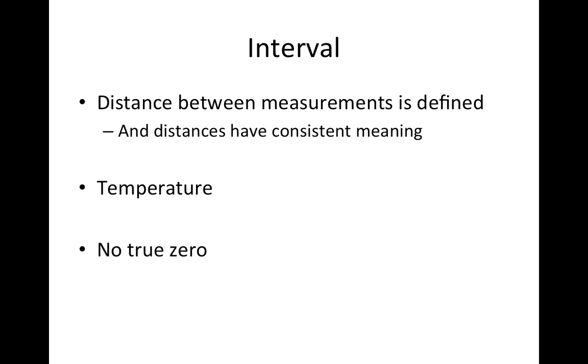That's why temperature is an appropriate example here. Yes, we can record a temperature of zero degrees centigrade, but it doesn't actually mean an absence of heat, because we can go below this with minus temperatures. Minus five is lower than zero degrees centigrade, and so there is no true zero, and so it's interval scale.